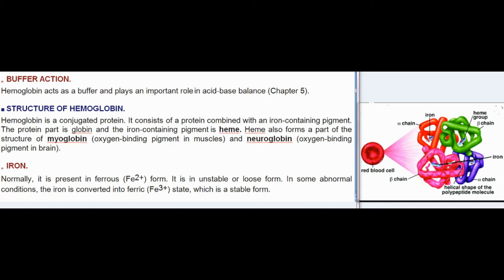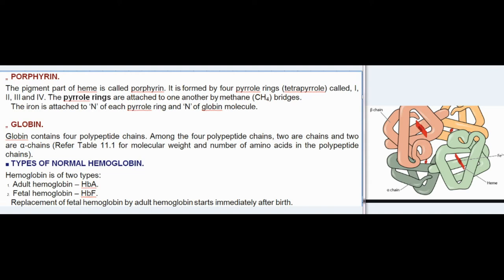The protein part is globin and the iron-containing pigment is heme. Heme also forms part of the structure of myoglobin (oxygen-binding pigment in muscles) and neuroglobin (oxygen-binding pigment in brain). Iron is normally present in ferrous form in an unstable or loose state. In some abnormal conditions, the iron is converted into the ferric state, which is a stable form.